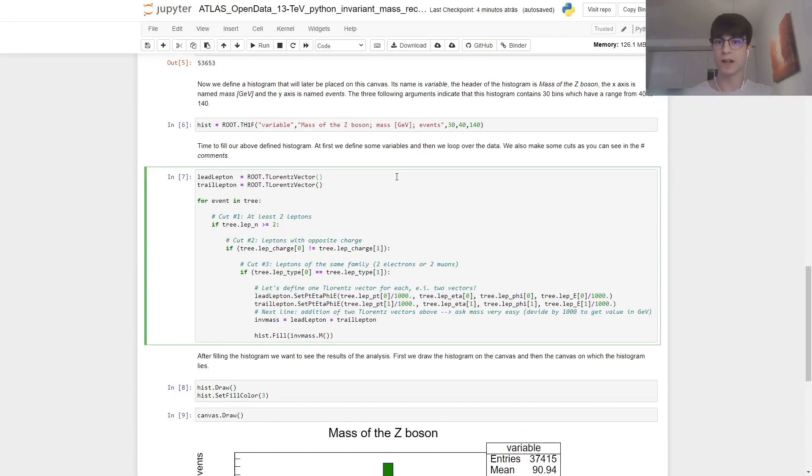Now we begin dealing with the selection cuts. So we first declare the leading lepton as a ROOT TLorentzVector, and we do the same thing for our trailing lepton. So now we have two leptons being declared as their four-momentum. If you remember from the slides, to begin with the selections, we need to first have a for loop to go over each entry. So we do 'for event in tree', and as our first cut, we're going to remove any event that has less than two leptons. So we do 'if tree.lep_n >= 2', then we pass along the data.